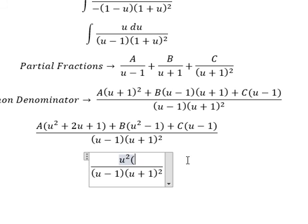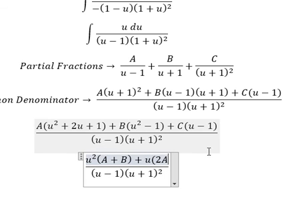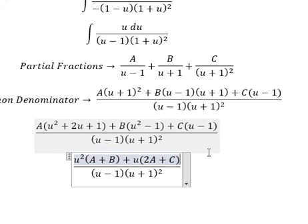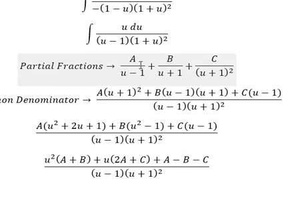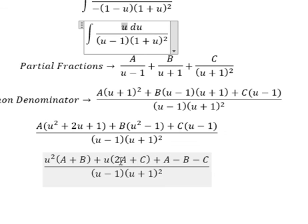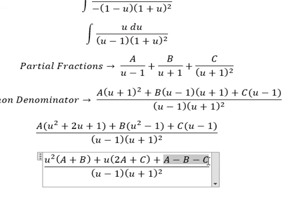Comparing coefficients: for u², we have A plus B. For u, we have 2A plus C. For the constant term, we have A minus B minus C. Since there is no u² term and no constant term on the right side, and the coefficient of u is 1, we get: A plus B equals 0, two A plus C equals 1, and A minus B minus C equals 0.